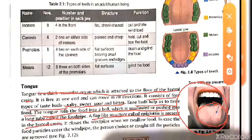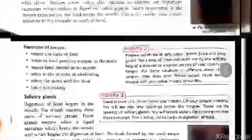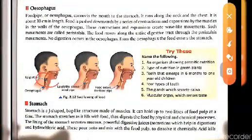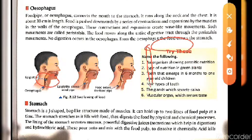A flap-like structure called the epiglottis is present in the buccal cavity — like a lid or 'dhakkan'. The epiglottis closes the windpipe while we eat food. However, if we talk while eating, the windpipe opens and food may enter, causing us to choke.